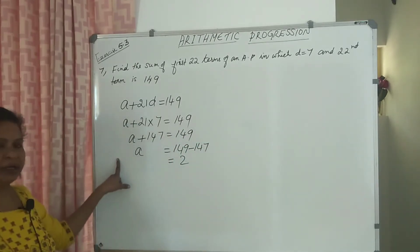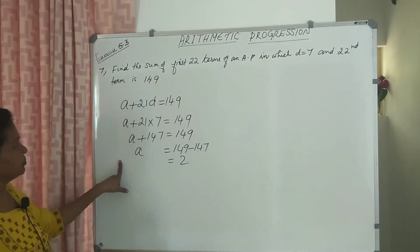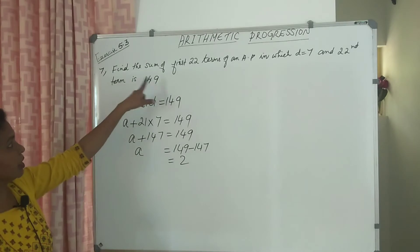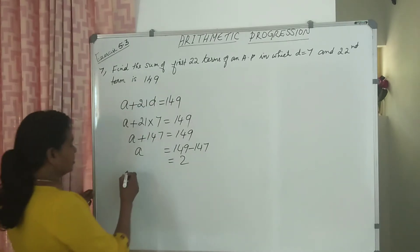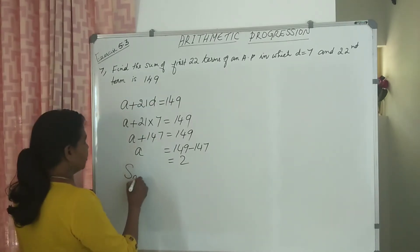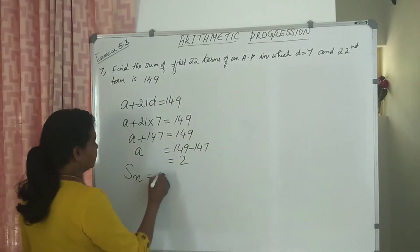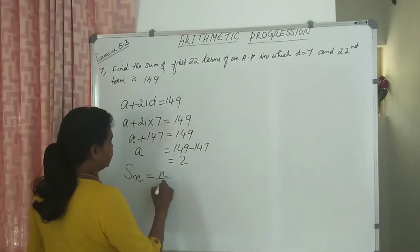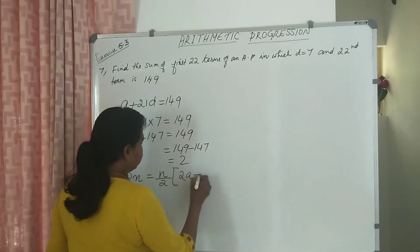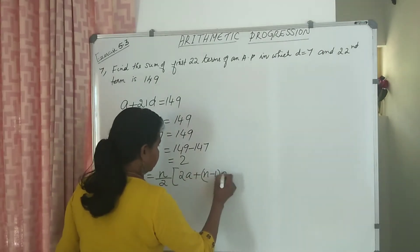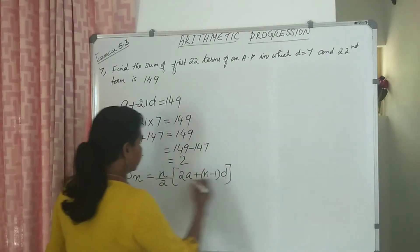Now we will get the A value. We need the sum of first 22 terms. So write the formula of Sn equal to N by 2 into 2A plus N minus 1 into D.